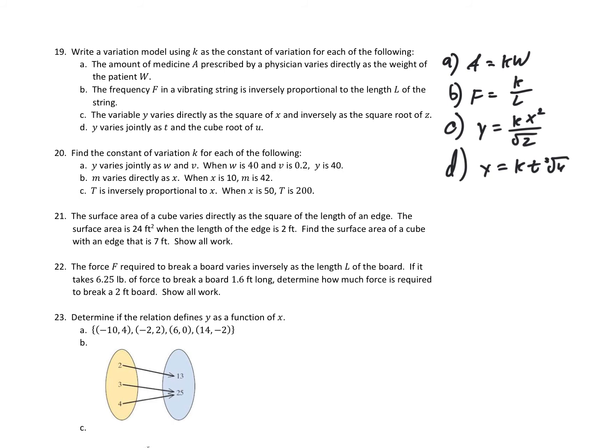For number 20, we find the constant K using given values. Part A: Y varies jointly as W and V, so Y equals K times W times V. We're given W equals 40, V equals 0.2, and Y equals 40. Plugging in: 40 equals K times 40 times 0.2. Solving gives K equals 5.